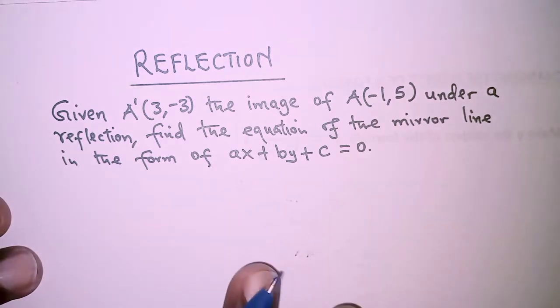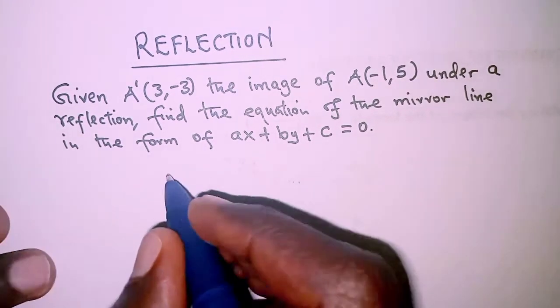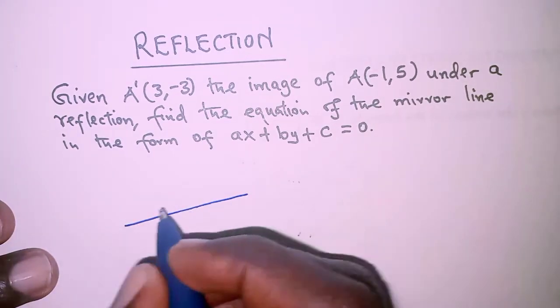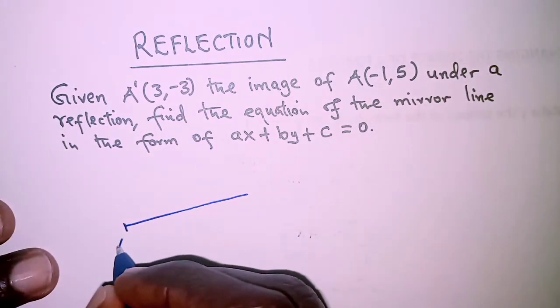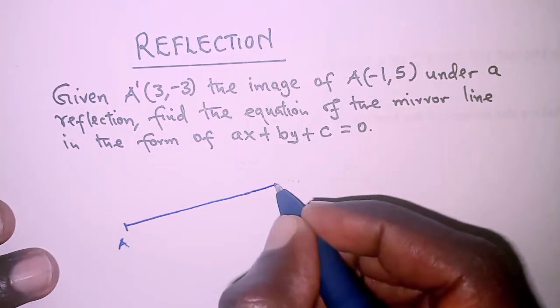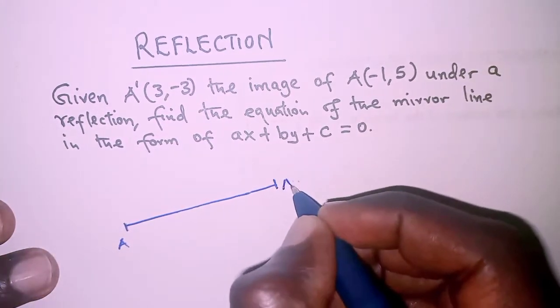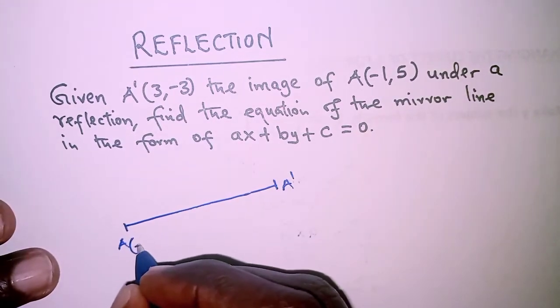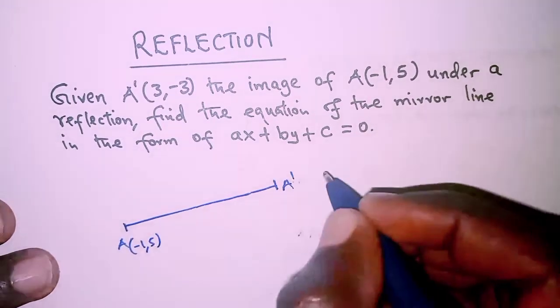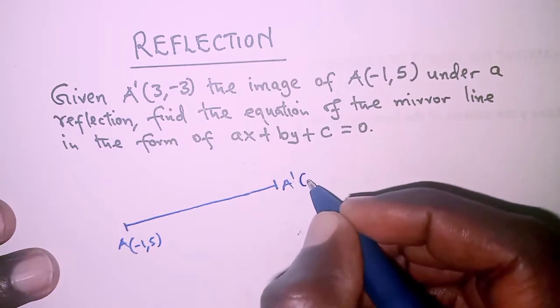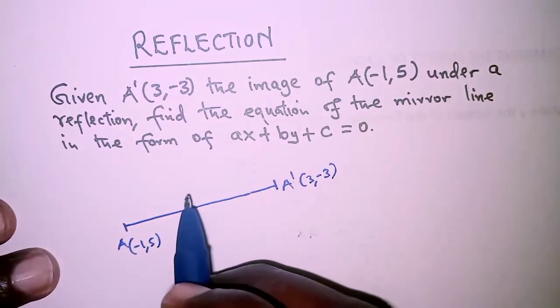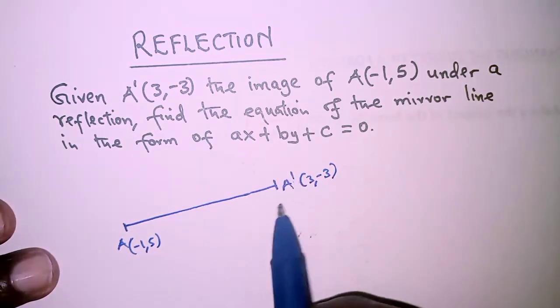So when we sketch this, for example here we have point A and then A prime. So A we're given as (-1,5) and A prime is (3,-3), and we're told that A prime is the image of A under reflection.